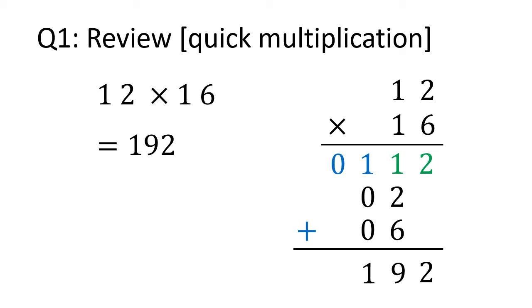Let's see how we can modify to calculate 12 times 16. Since both tens digits are 1, we have the product of 10 and 10, which is 100. We also have the product of ones digits, 2 times 6, which is 12.